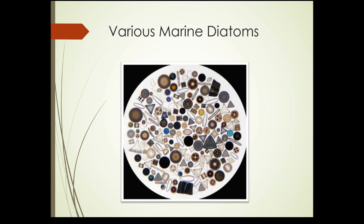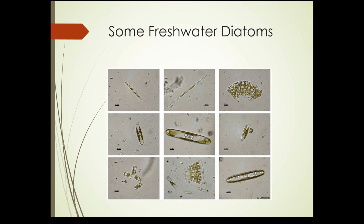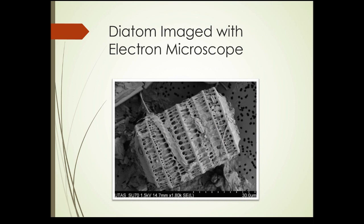Diatoms can live in virtually any aquatic habitat. This slide shows marine diatoms, which means these are from salt water. This next slide shows some freshwater diatoms. If you look at these photo micrographs you can see large differences in shapes — from long rod-like forms to more rounded ends, fan shapes, and a number of different shapes and sizes. This next slide shows a diatom imaged with an electron microscope, which gives us a much closer look at the intricate structure of this silicon-based cell wall.